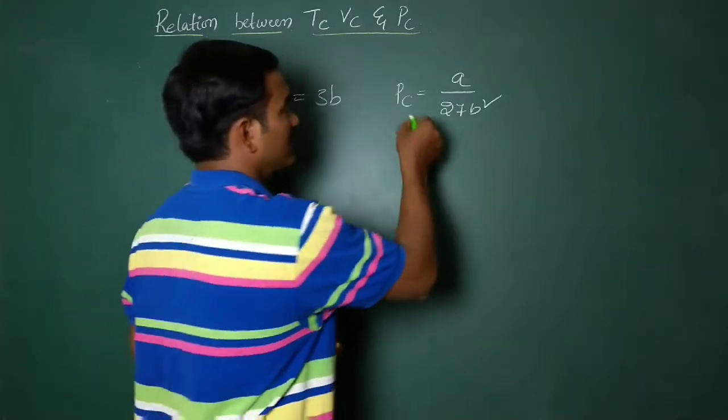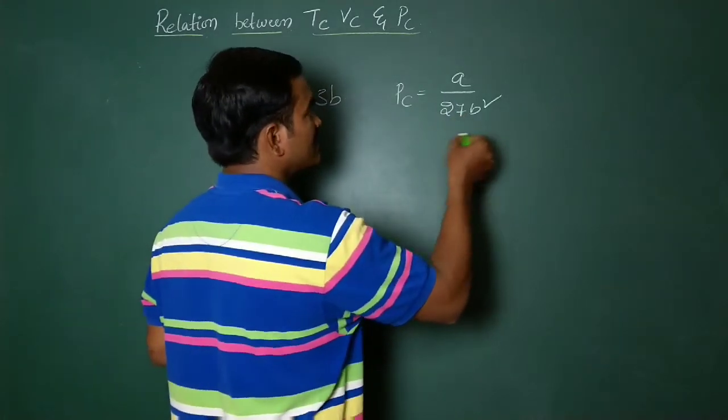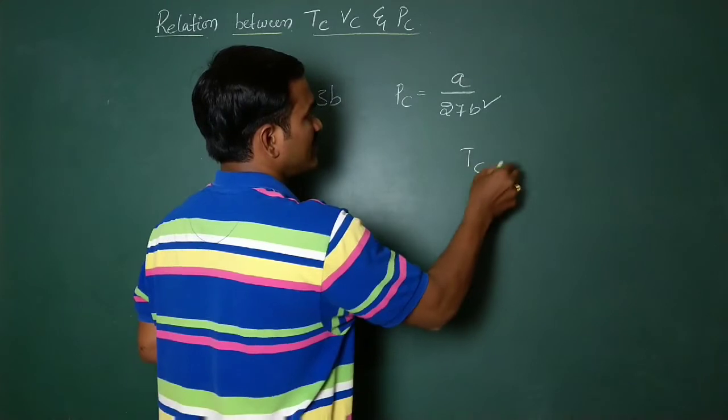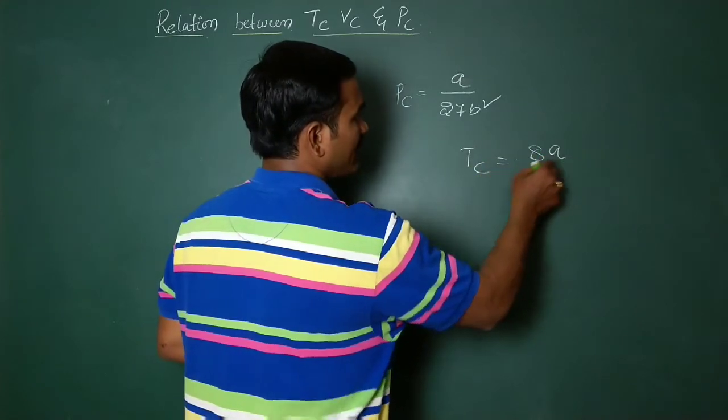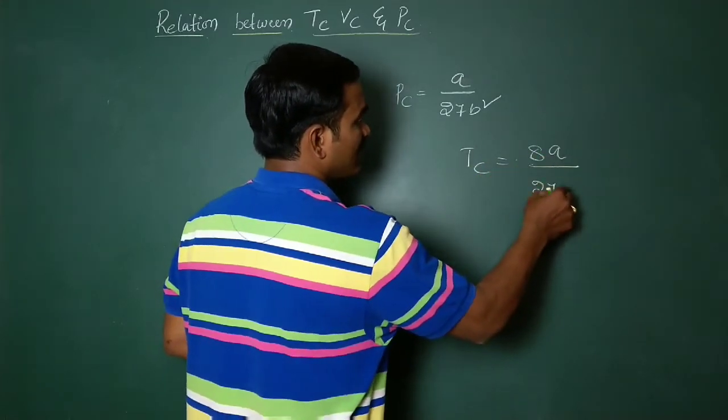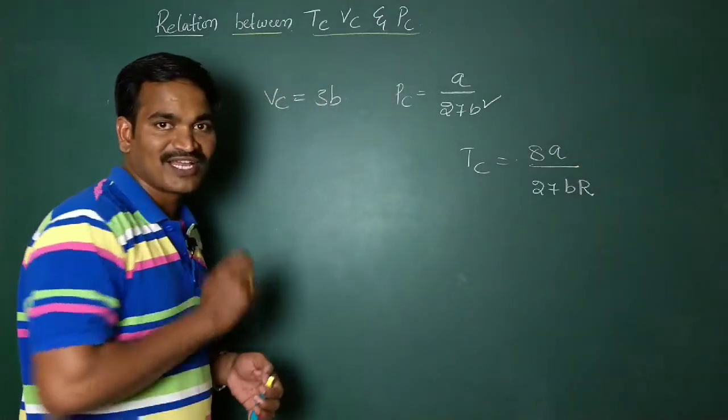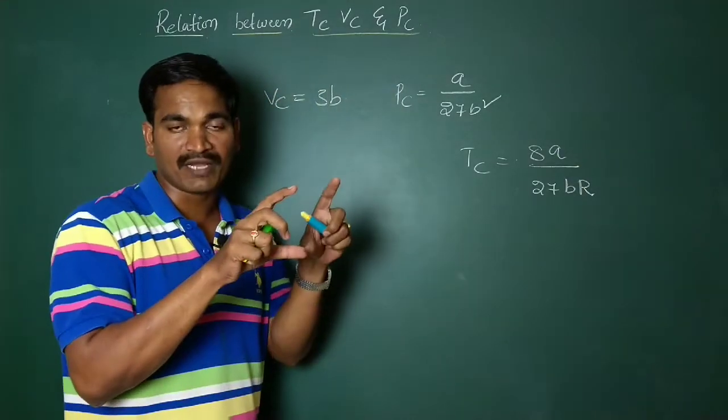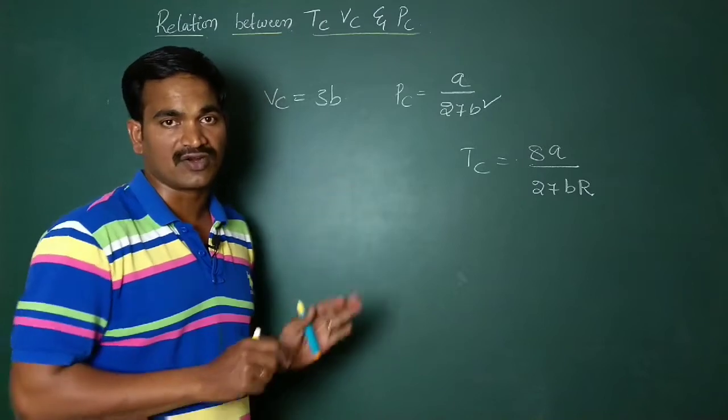And next one, you can take Tc. Tc equals 8A by 27BR. Now, these formulas you have to remember if you want to know about the relation between these critical constants.